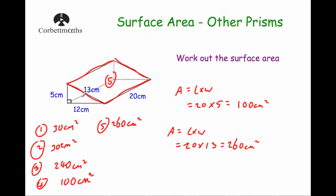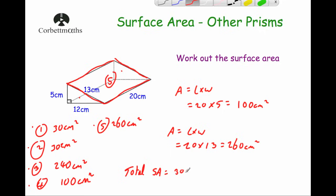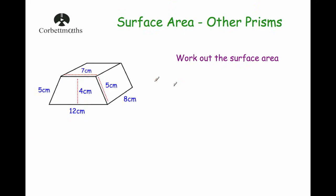All we need to do now is add the areas of those five faces — the front, the back, the bottom, the left, and the sloped one — to get the total surface area. Total surface area equals 30 plus 30 plus 240 plus 100 plus 260, which gives us 660 centimeters squared.